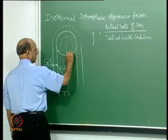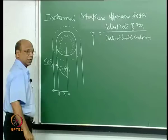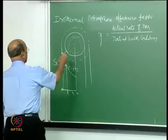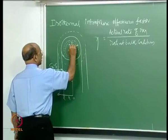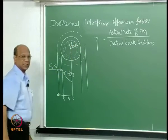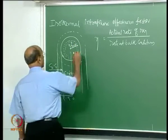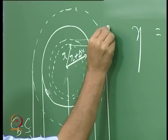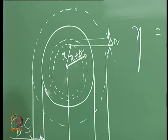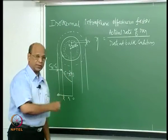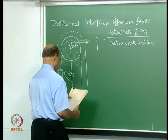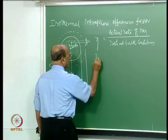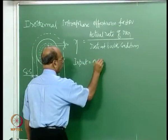Where do we get the concentration gradient? From the mass balance. We take a thin shell inside the particle: this is r, this is r + δr, and δr is the thickness. We write what is entering the shell, what is leaving the shell, and what is reacting in the shell at steady state conditions. Writing that material balance for A going to B: input = output + reaction + accumulation.